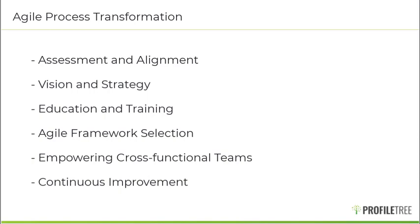Another key step in agile transformation is having a clear vision and strategy. You may do this by defining a clear vision for everyone to follow and understand, clearly identifying an agile culture and the outcomes of your transformation. You can then communicate that vision and strategy throughout your whole organization to gain the buy-in of your employees and motivate them towards acting on the new change within your business.